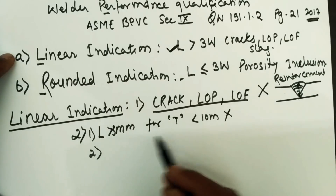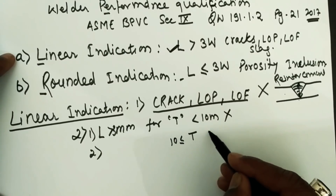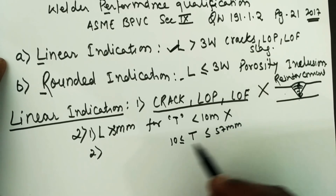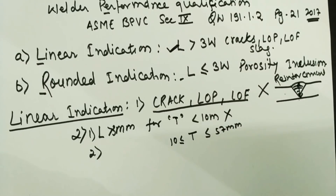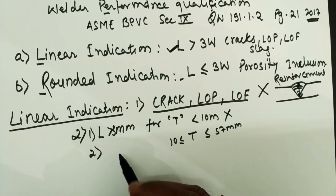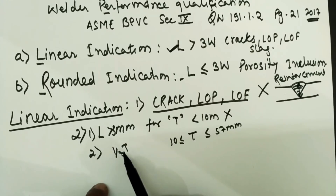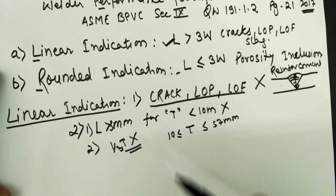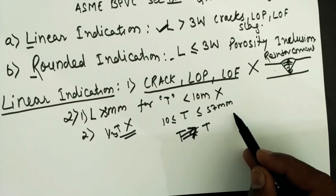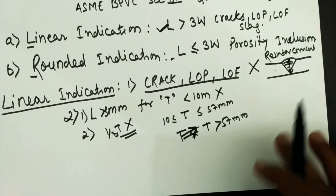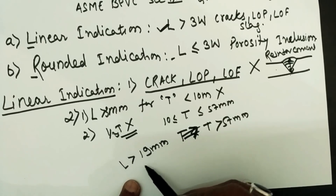Under this heading, there is one more criteria. If the thickness of the deposited weld metal is greater than or equal to 10 mm and less than or equal to 57 mm, then the length of elongated slag inclusion that shall be rejected is more than one-third of T. And if the thickness of deposited weld metal is more than 57 mm, then any elongated slag inclusion whose length exceeds 19 mm shall be rejected.